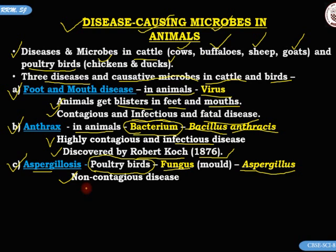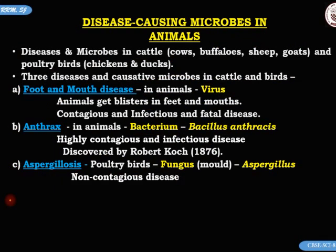So those are the three important diseases. To recap: foot and mouth disease is caused by a virus; anthrax is caused by a bacterium called Bacillus anthracis; and the third, aspergillosis, is caused by a fungus called Aspergillus. Now let me show you some images to make our learning more interesting.